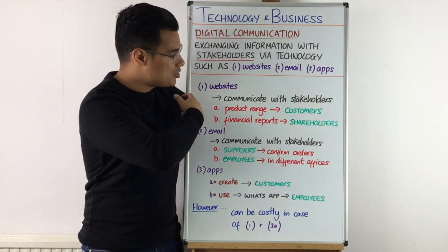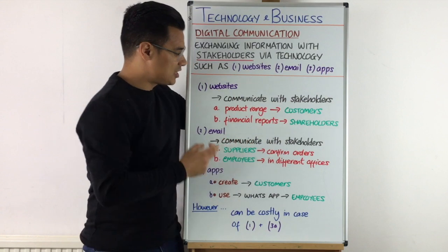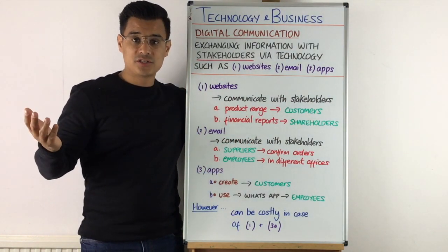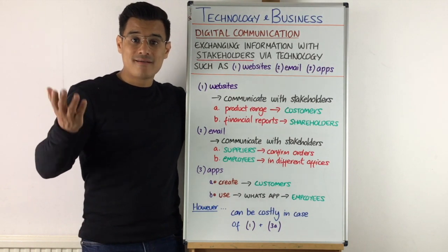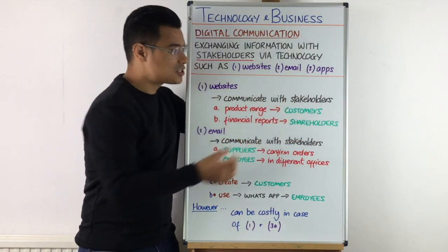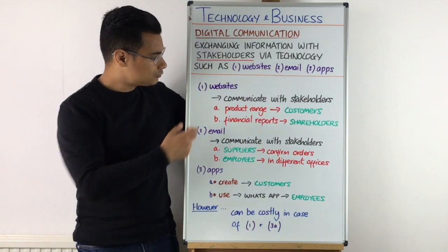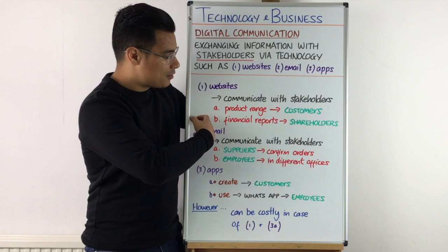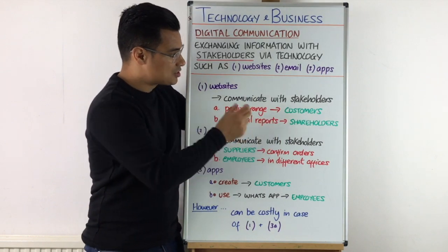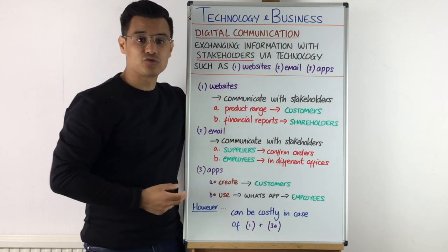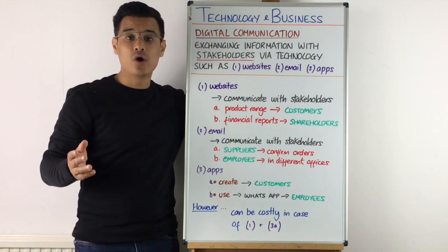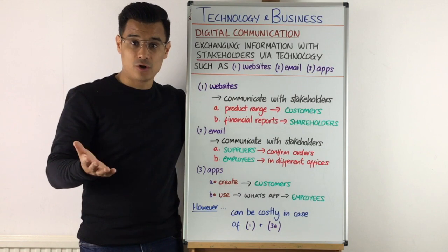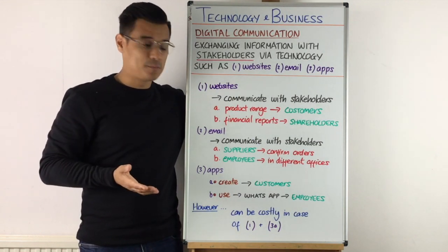With websites, you could use digital communication to communicate with your stakeholders by putting your product range — all the products that you sell — on your website, communicating that information to your customers, who are a stakeholder. You could also use websites to communicate your financial reports. The stakeholders who care about financial reports are your shareholders — both existing shareholders and potential shareholders looking to buy a share of your business.